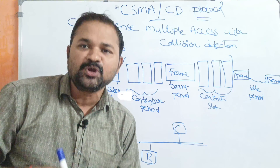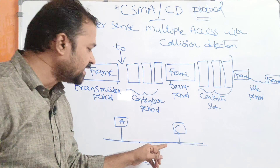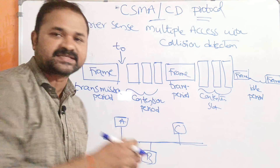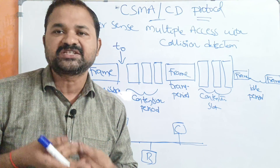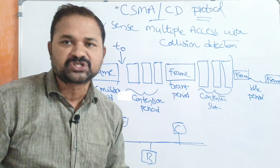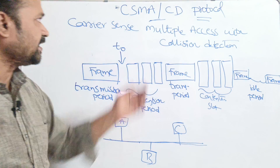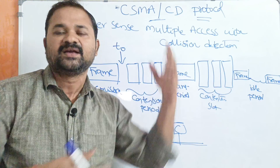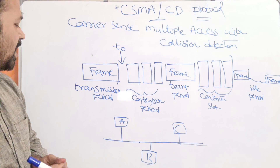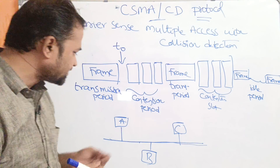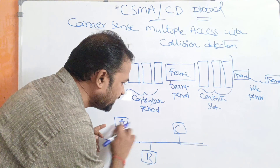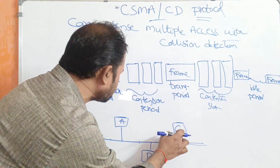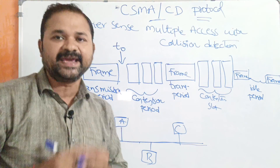Multiple users can access the corresponding shared medium. We can call these as devices, stations, nodes, or users. Next we have Collision Detection — we will discuss this point later. Let us assume our aim is that A wants to send a frame to C, and C wants to send a frame to A.